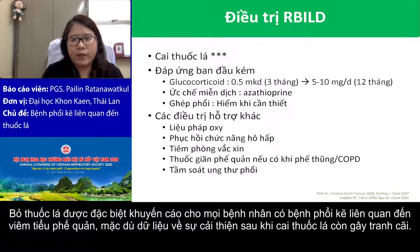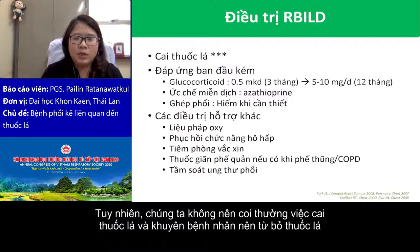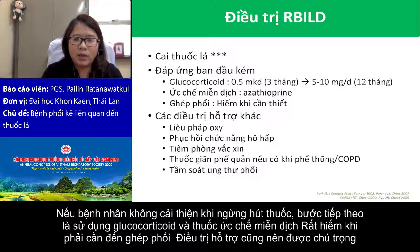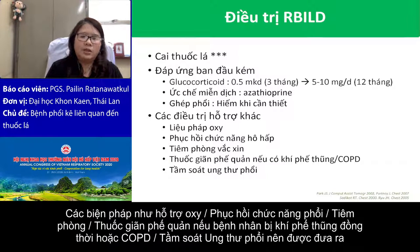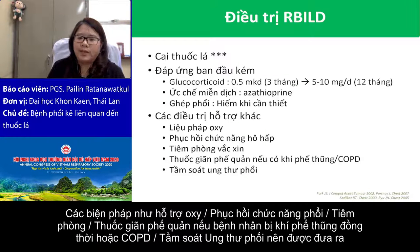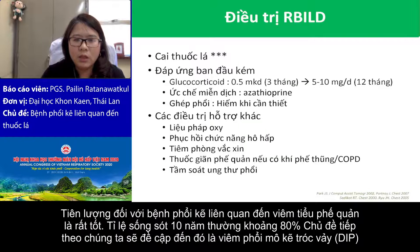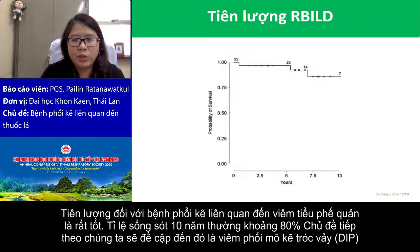Smoking cessation is strongly advised for every patient with RB-ILD. Although the data about improvement following smoking cessation are controversial, we should advise every patient to stop smoking. If the patient does not improve with smoking cessation alone, the next step is glucocorticoids and immunosuppressives. Lung transplantation is rarely needed. Doctors should pay attention to oxygen support, pulmonary rehabilitation, vaccination, and prescribe bronchodilators if the patient has concomitant emphysema or COPD. Lung cancer screening should be performed because these patients are heavy smokers. The prognosis of RB-ILD is very good — 10-year survival is around 80%.